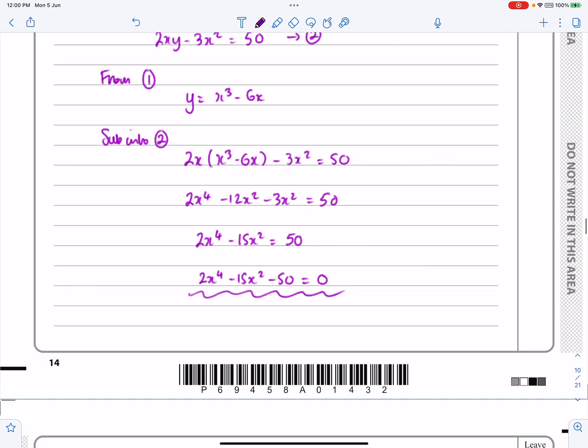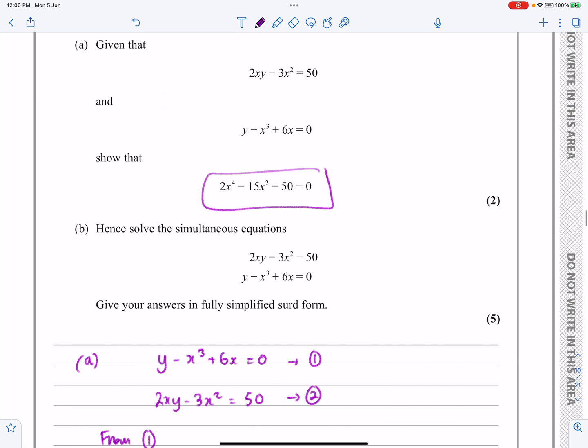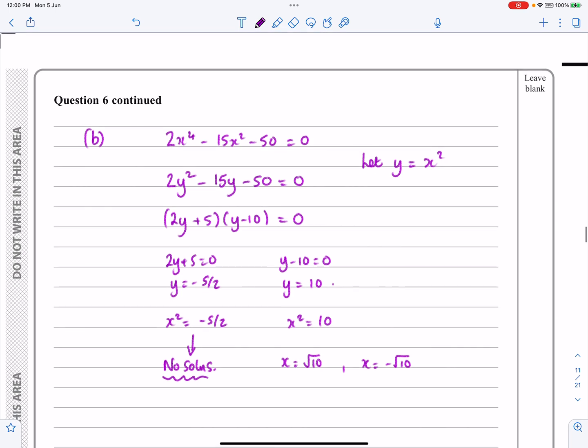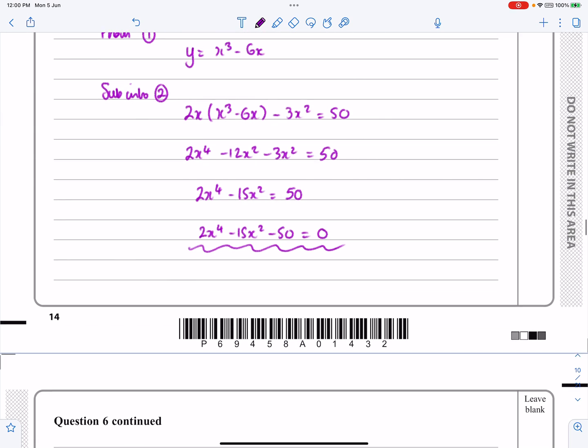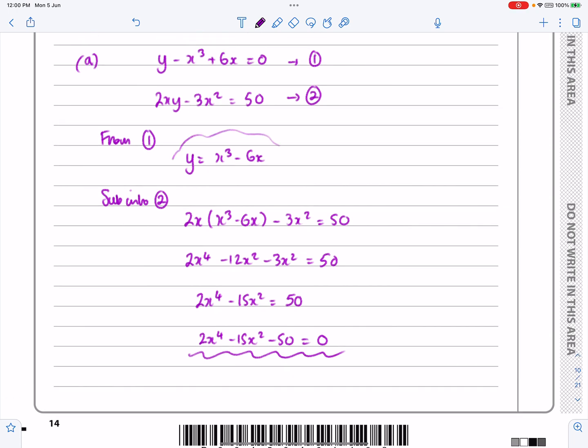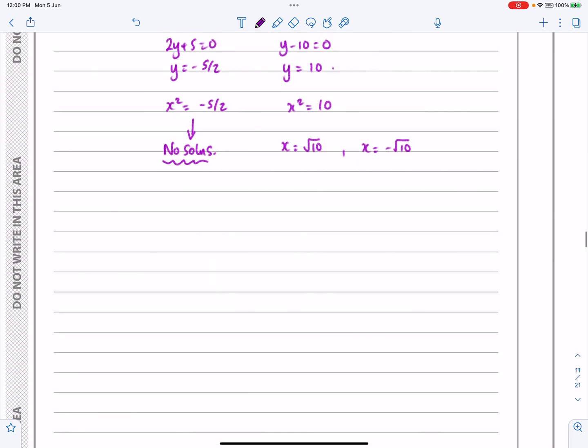I'll sort of go back and remind myself of what I'm doing here. Solve the simultaneous equation. So I need x's and y's for that. So I'm now going to put x equals root 10 and x equals minus root 10 into one of the equations for y. And that's the simplest version I've got of y at the moment. Y equals x cubed minus 6x.